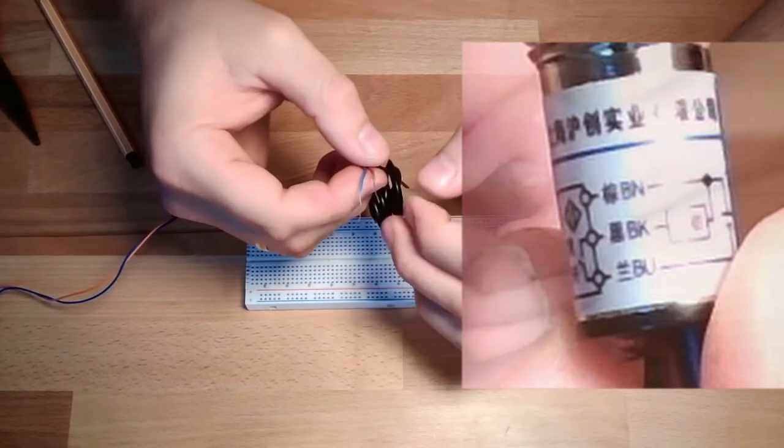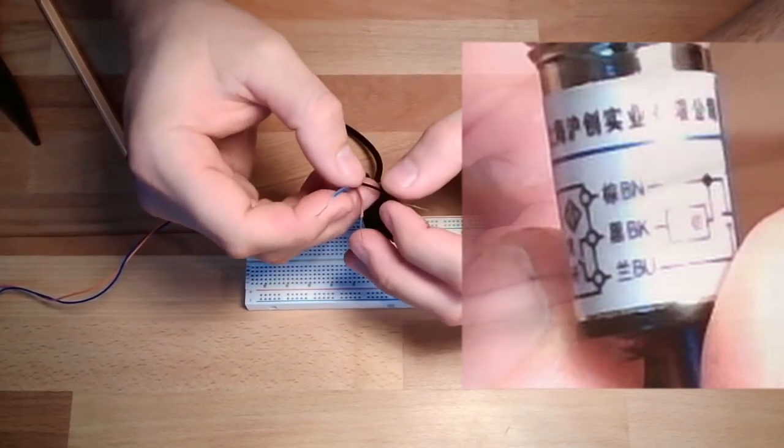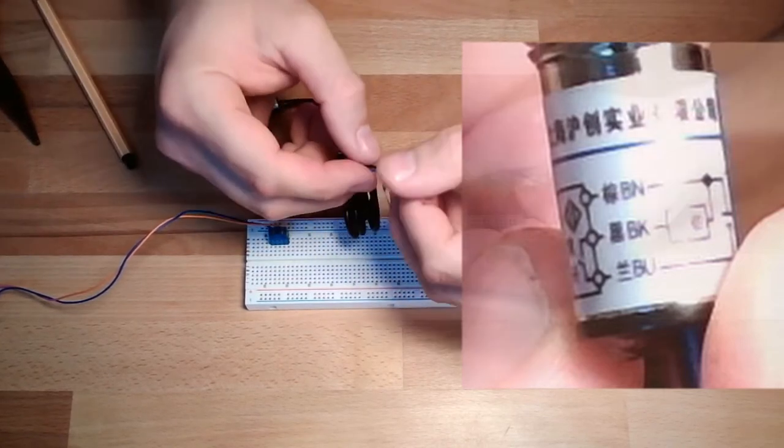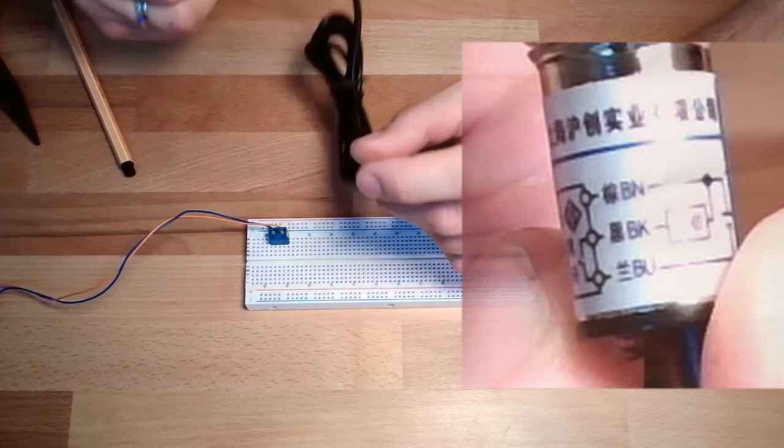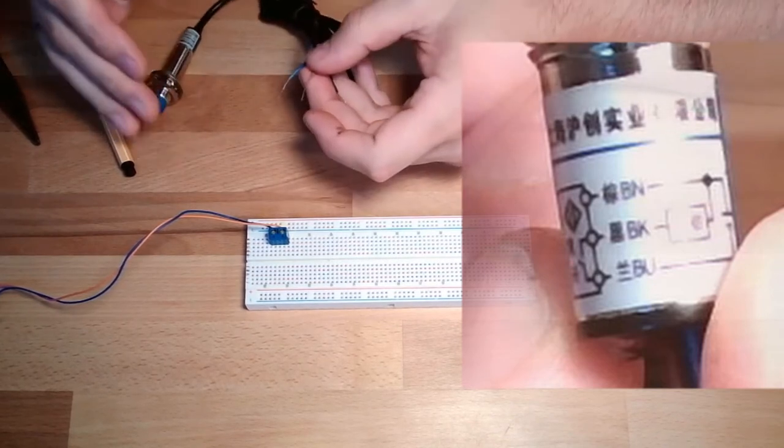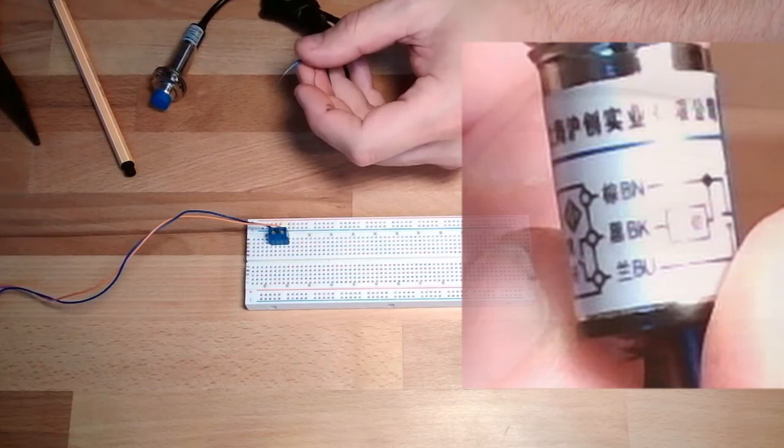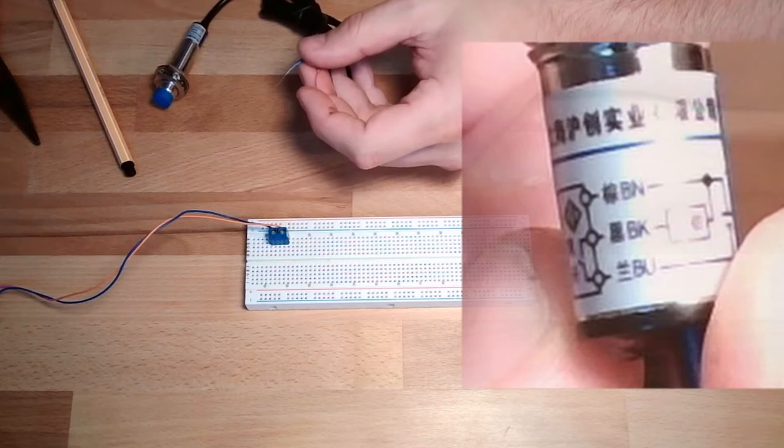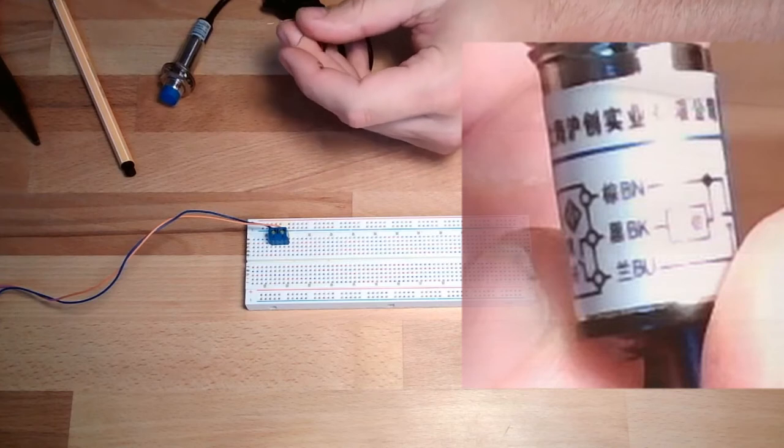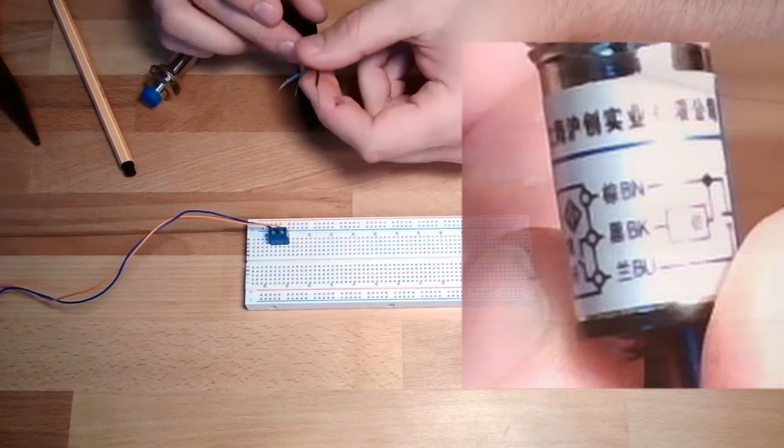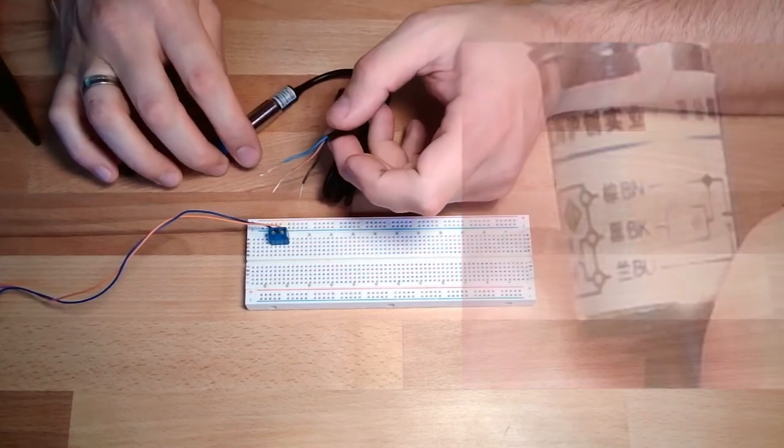These are referring to the colors of the wires. BN is brown, BK is black, and BU is blue. And there is written brown should be plus, blue shall be minus, and black is the signal. And the signal shall be between plus and minus. Because it's NPN, we need negative switching. We need to have it between plus and minus. This fits together.